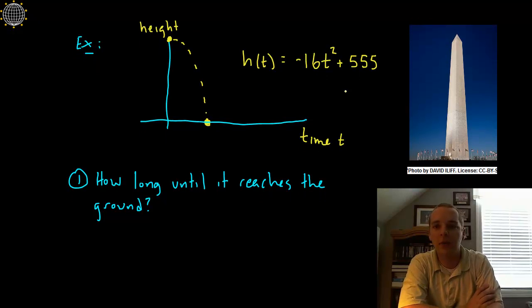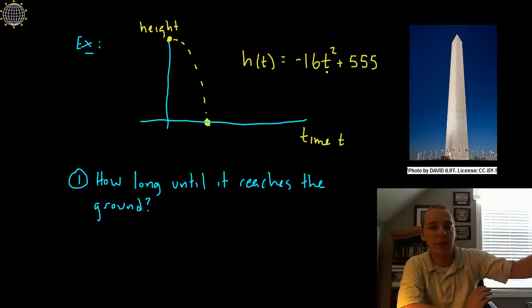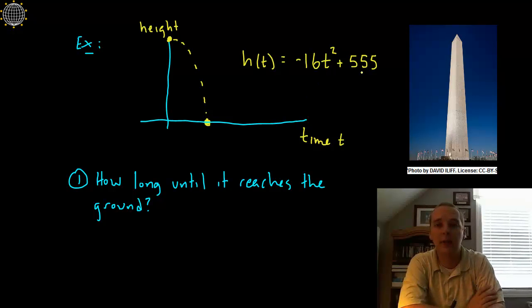Here we're given a function h(t) = -16t² + 555. This is the height of the Washington Monument in Washington DC, and given a time, if we were to drop a penny off of the top of the Washington Monument, it would tell us what the height of the penny is.